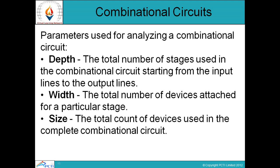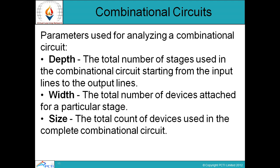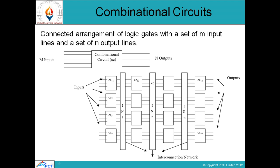Next is width — the total number of devices attached for a particular stage. Here the width is 4: CC1, CC2, CC3, CC4. Next is size — the total count of devices used in the complete combinational circuit. In this example, our size is 16, since we have 4 circuits across 4 stages, giving us 4 times 4 equals 16.